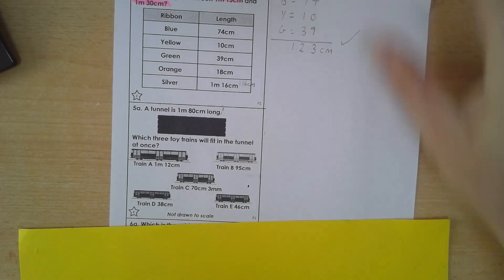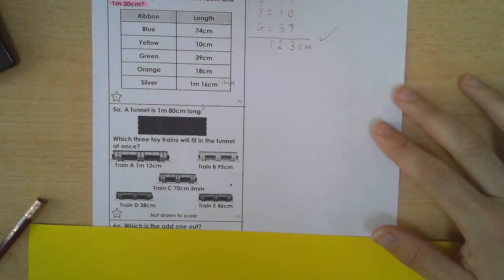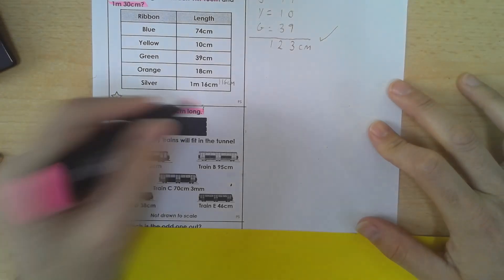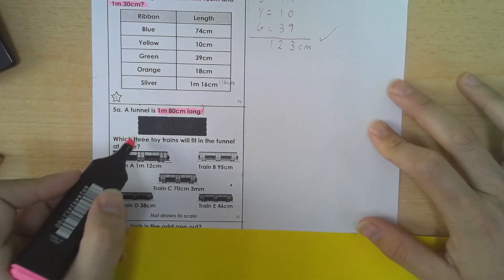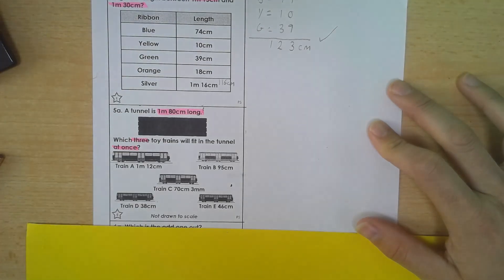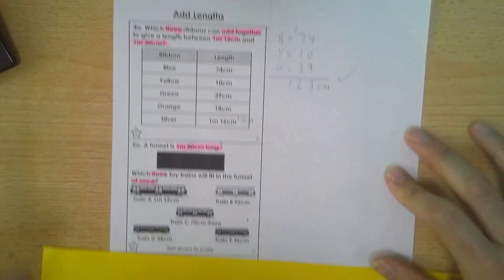So moving up, 5A, or number 2 on the sheet. A tunnel is 180 centimetres long. That's 1 metre 80. I've already converted it in my head. Which three toy trains will fit in the tunnel at once? So it's going to be another addition here, which we guessed with the title of the sheet. We're adding lengths.